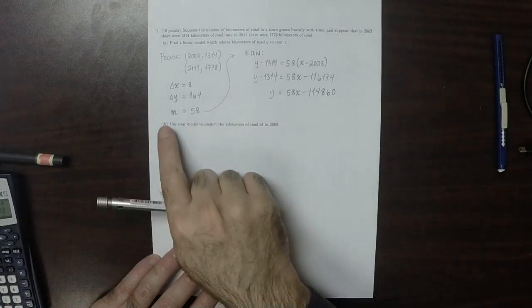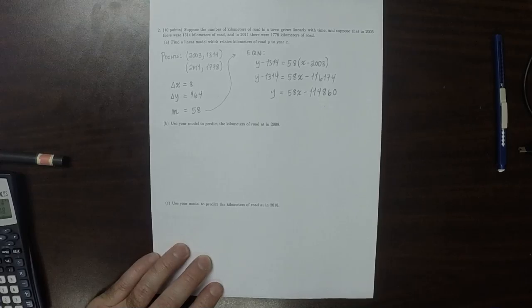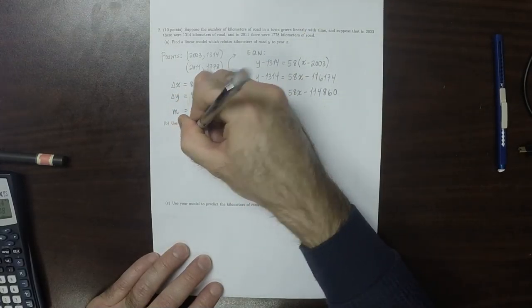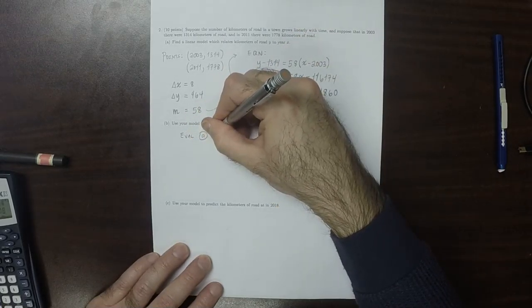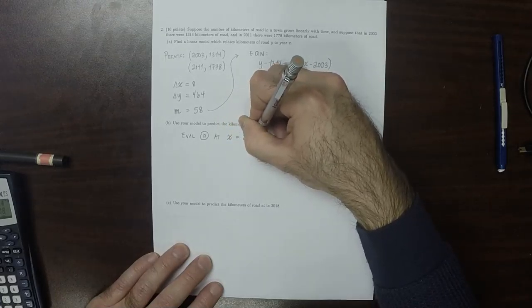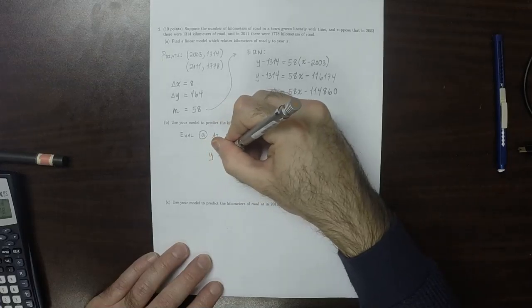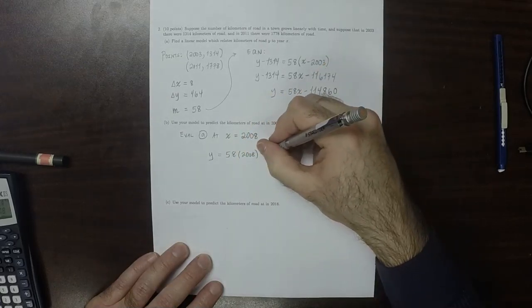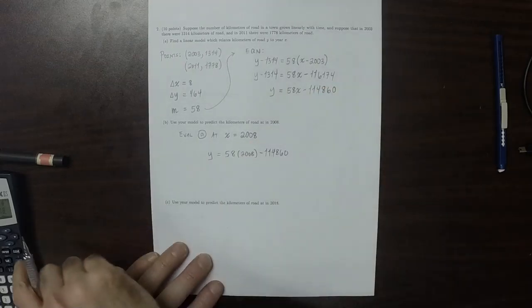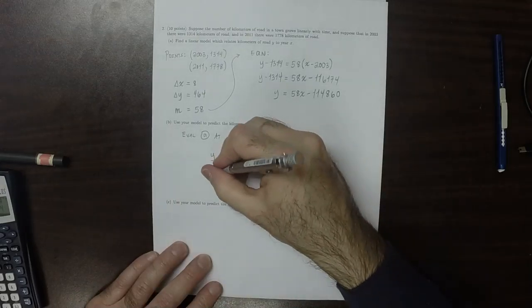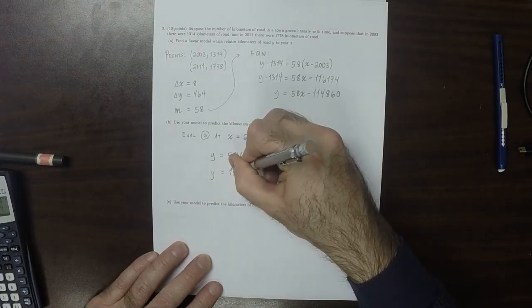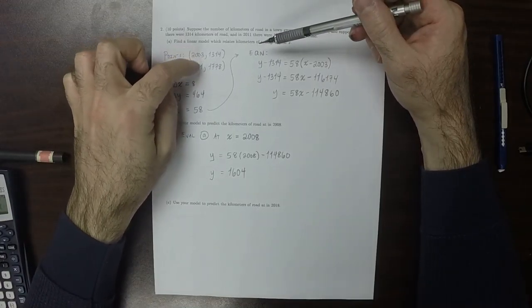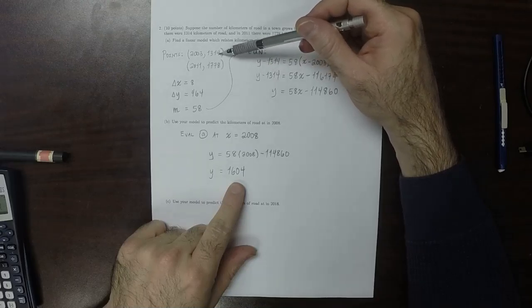So to translate part B into plain language, we want to evaluate the model in part A at x is 2,008. Which is to say, y is 58 times 2,008 minus 114,860. So that is y is 1,604. I can see that 2008 is intermediate between these two numbers, and the output y is also intermediate, so that's good.